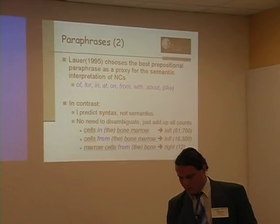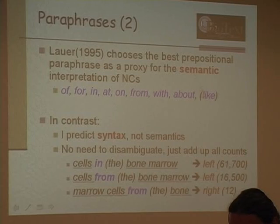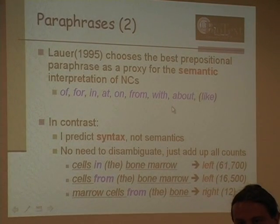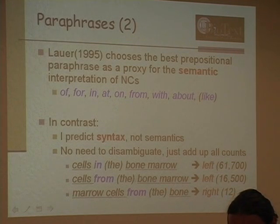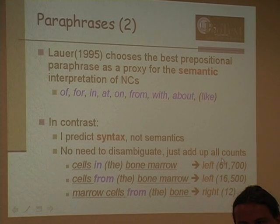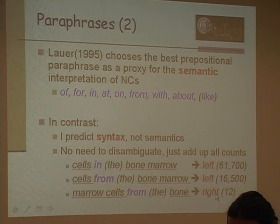Prepositions have previously been proposed as a way to get the semantics of noun compounds. But I'm not predicting semantics — I'm predicting syntax. I just count: 'cells in the bone marrow' predicts left bracketing; I sum all left-predicting paraphrases versus all right-predicting ones and compare. This is the paraphrasing model.